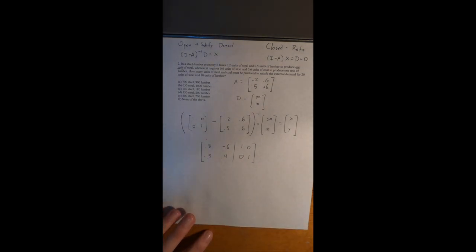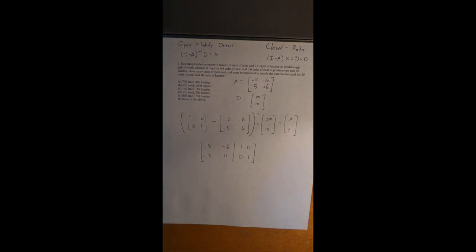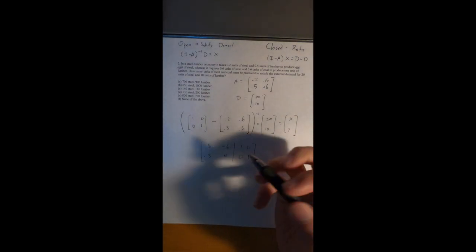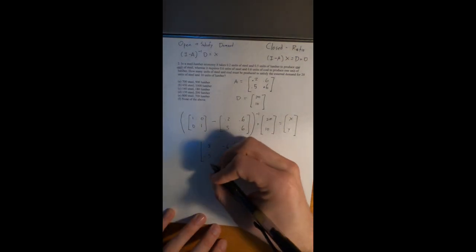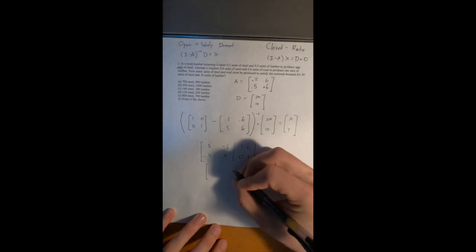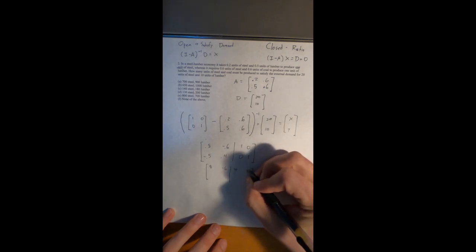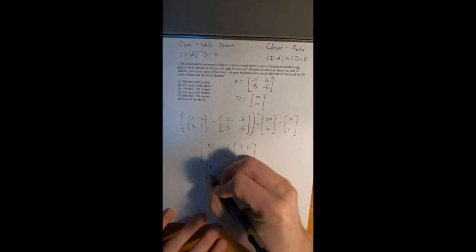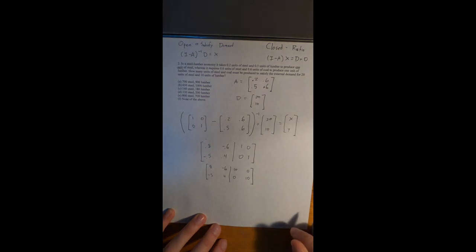It's easier to find the inverse if we multiply everything in the matrix by 10 to eliminate decimals. Remember to do that to the right side as well. That gives us the augmented matrix: [[8, −6 | 10, 0], [−5, 4 | 0, 10]].